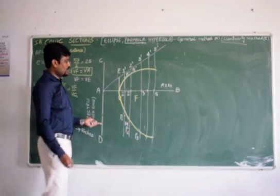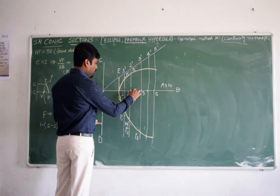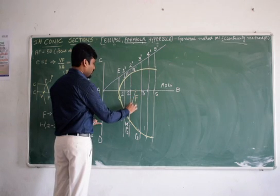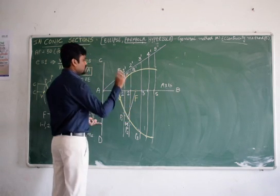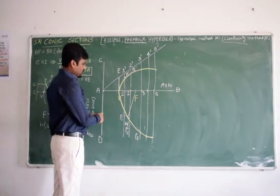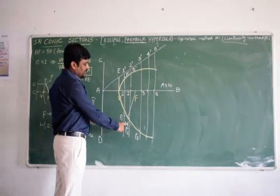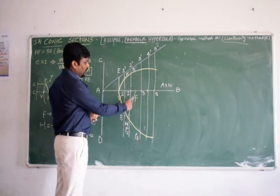Now join this M to F. Join the point M to F. I hope you understood. From the directrix locate any point on the curve. That point give some naming. Join that point to the focus.